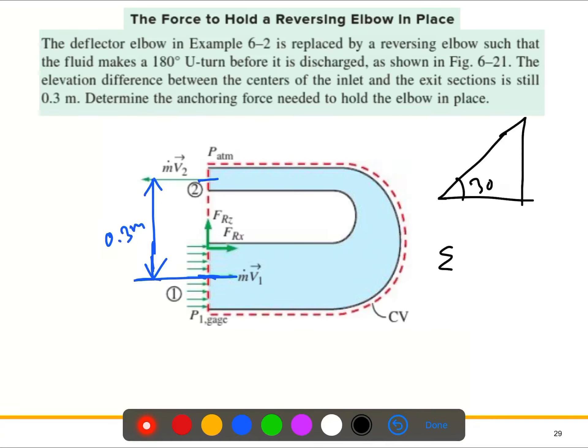So what we can write down from the momentum equations is: the summation of F is equal to the sum of the force out, beta m dot v, minus the force in.